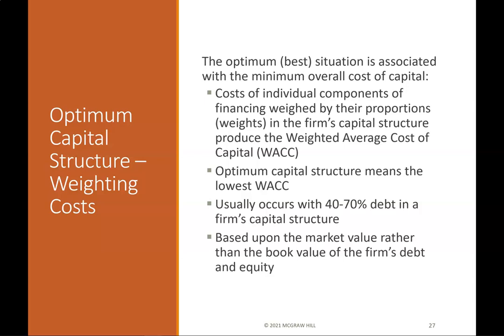Optimum capital structure — weighting costs: The optimum situation is associated with the minimum overall cost of capital. The costs of individual components of financing, weighted by their proportions in the firm's capital structure, produce the weighted average cost of capital (WACC). The optimum capital structure means the lowest WACC, which usually occurs with 40–70% debt in a firm's capital structure, based on market value rather than book value.